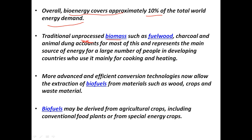Traditional unprocessed biomass — for example fuel wood, charcoal, and animal dung — represents the main source of energy for a large section of people. Even today, a large number of people use biomass like fuel wood and animal dung for cooking and heating. However, more advanced and efficient technologies now allow the extraction of biofuels from materials such as wood, crops, and waste material.